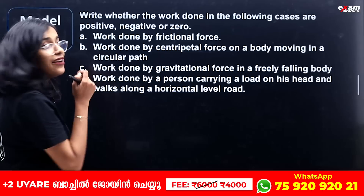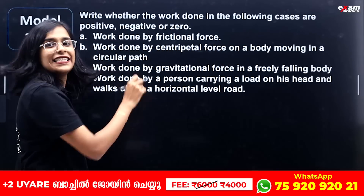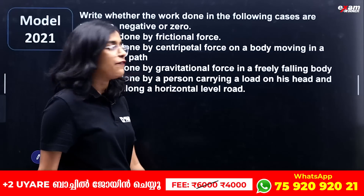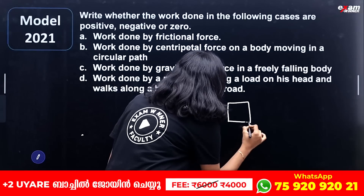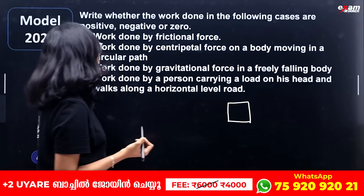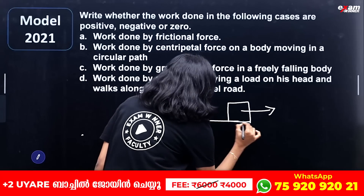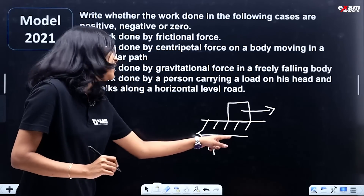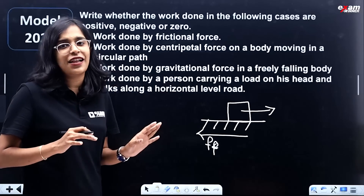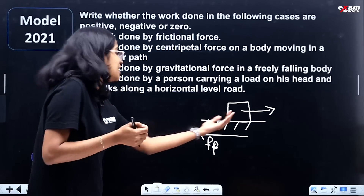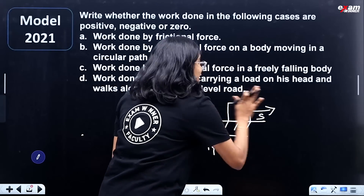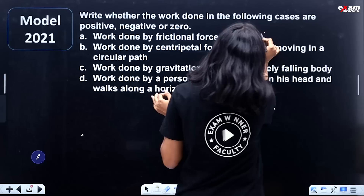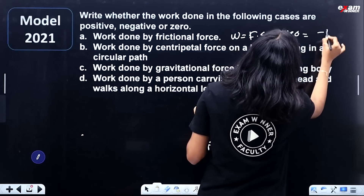Write whether the work done in the following cases is positive, negative, or zero. Work done by the frictional force on a moving object: frictional force acts in the opposite direction to displacement, so the angle is 180°. Work done W = F × S × cos 180° = minus F × S. Therefore, work done by friction is negative.